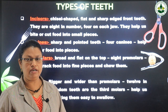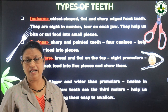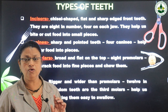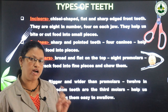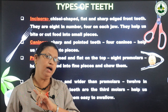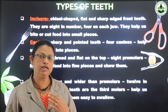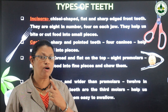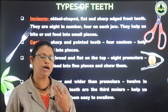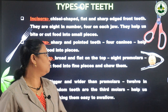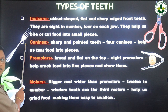The second type is canines. Next to the incisors we can see the canines. There are four canines in total — two in the upper jaw and two in the lower jaw, one on each side.